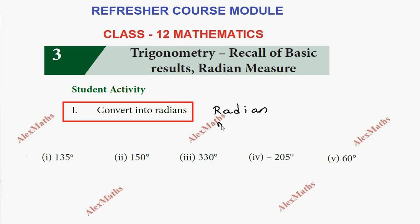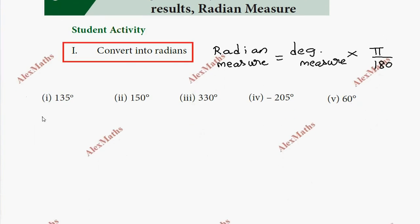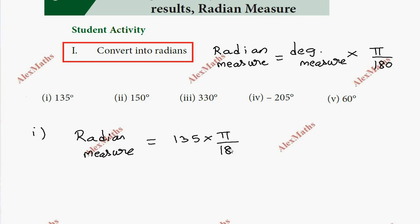Radian measure equals degree measure multiplied by π/180. So for the first subdivision, we need to find the radian value. The radian measure is obtained from the degree value 135 degrees, multiplied by π/180.